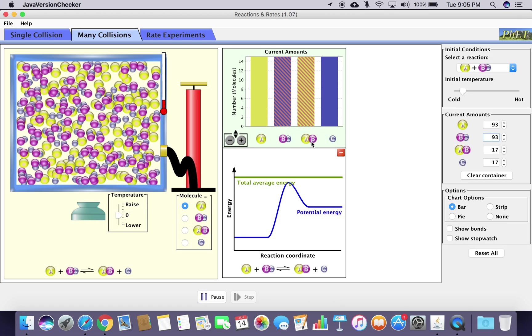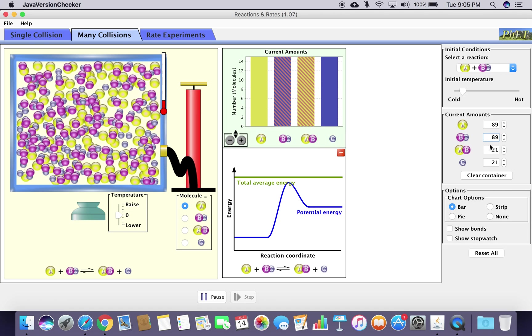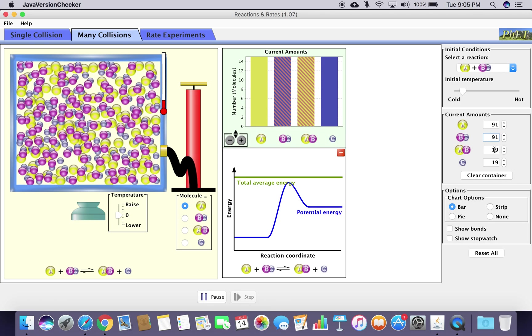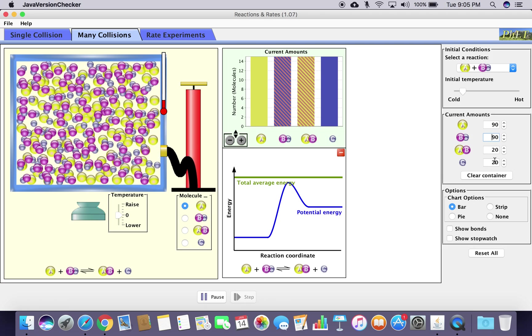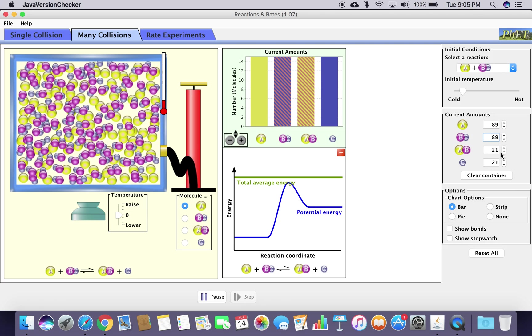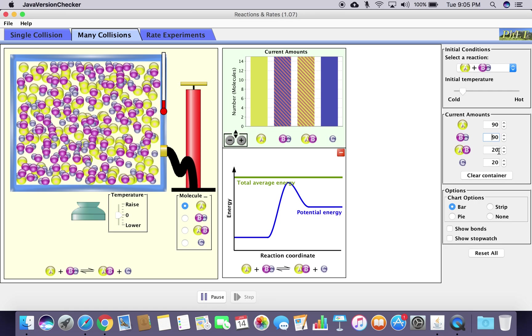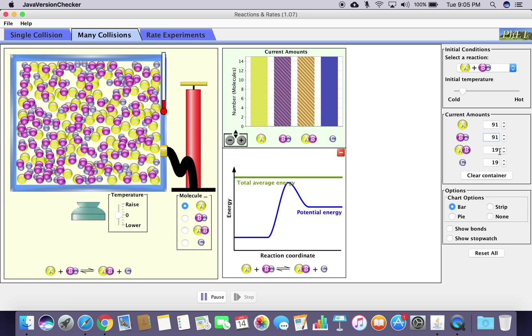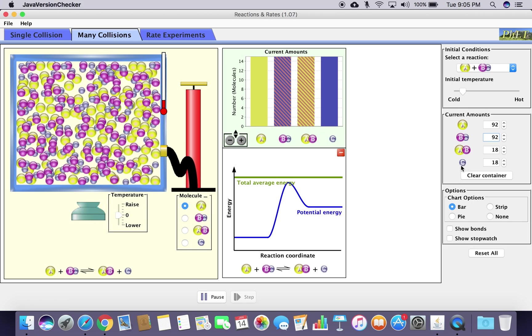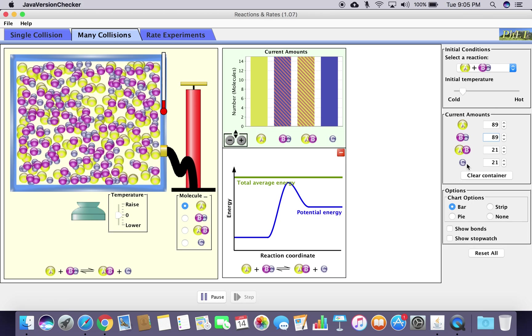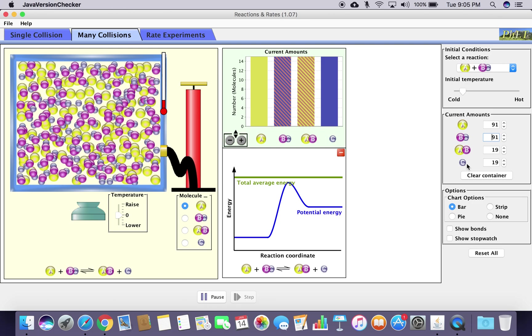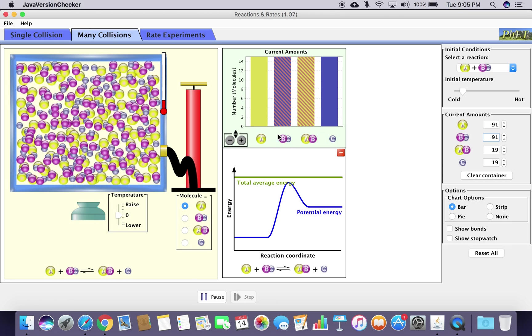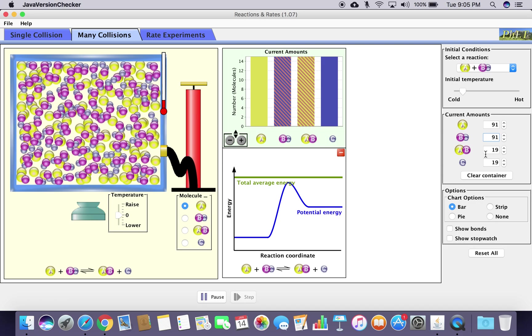We're now at about 90, 90, 20, 20 maybe. It seems like 18 to 17 is the low part of AB and C formed. Let's see how high it goes - 21 is a high number. The last one hung out more at 190, 10, 10, 10, but it's interesting that when you get A and BC at a more even ratio, these tend to bounce around a little bit more.